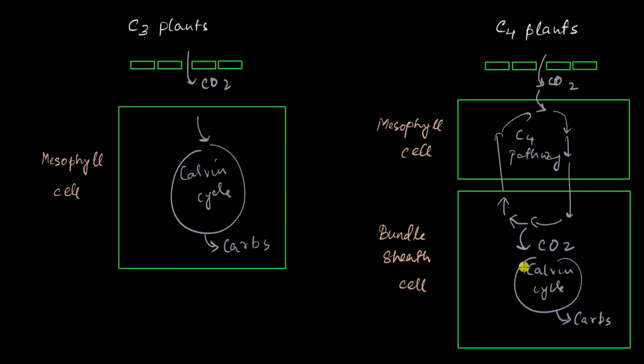So why go through all this hassle of first entering the C4 pathway then again releasing the CO2 in the bundle sheath cell and then having the Calvin cycle in the bundle sheath cell? Well the answer is photorespiration. Photorespiration is a wasteful pathway that happens in C3 plants and the C4 plants avoid this by going through this elaborate pathway, the C4 pathway.